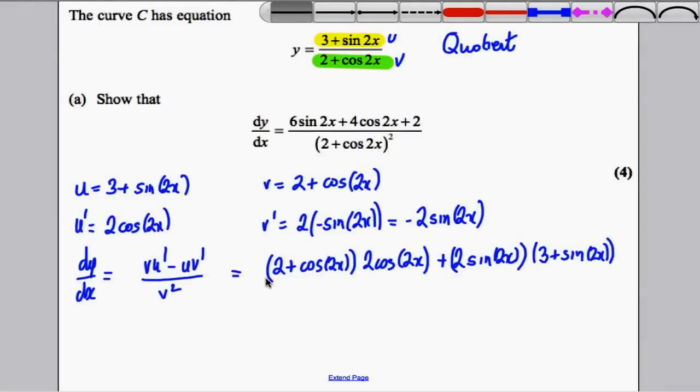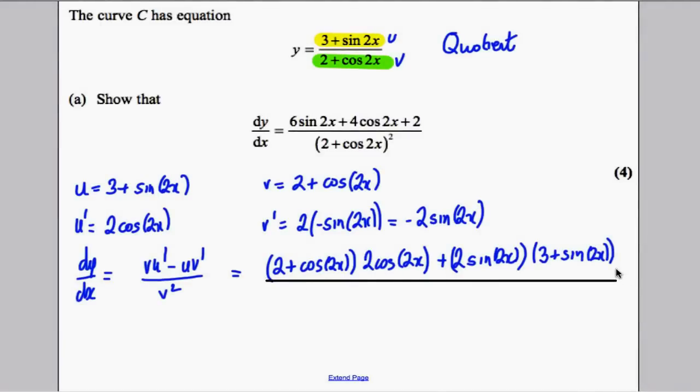OK, and all of this, don't forget at that stage that all of this then must be divided by v squared, which would be 2 plus the cosine of 2x, all of that squared.